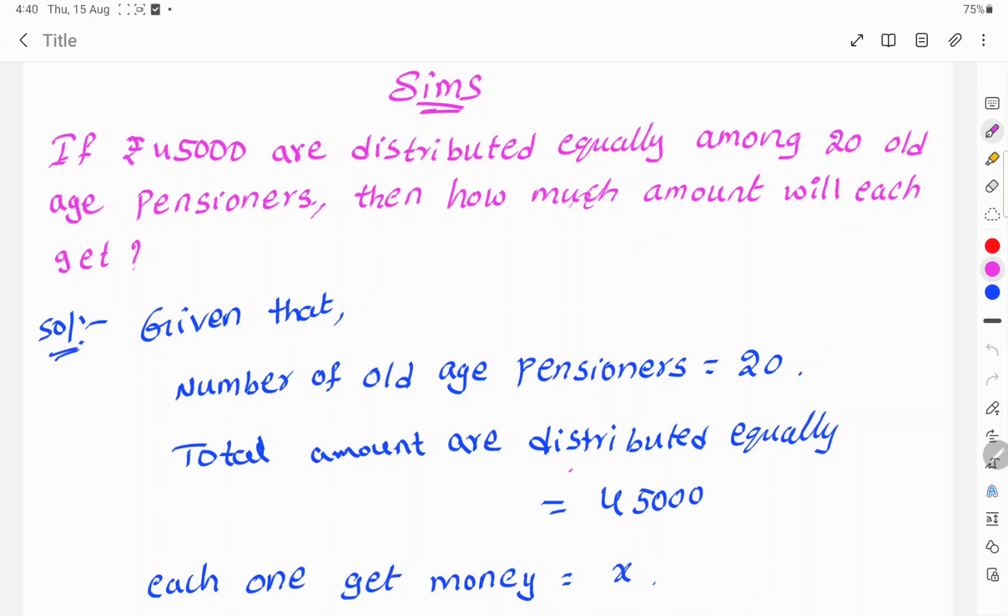Here 45,000 rupees are distributed equally among 20 old age pensioners. We need to find how much money each old age pensioner gets. Let's see the solution.